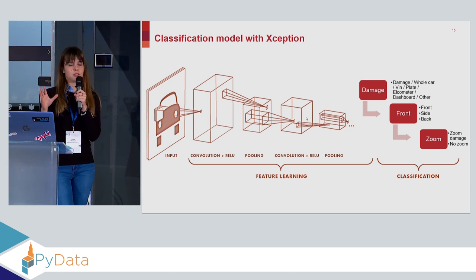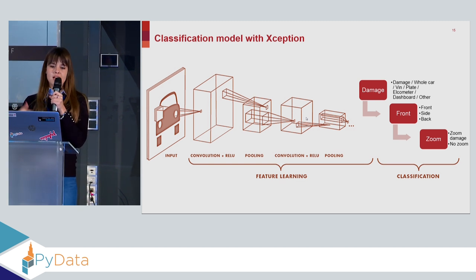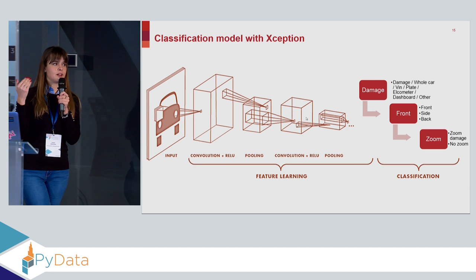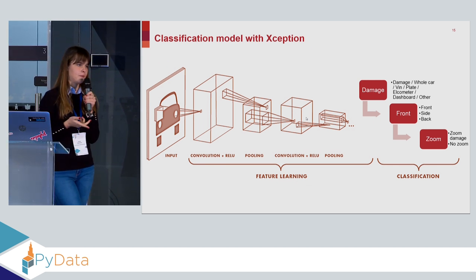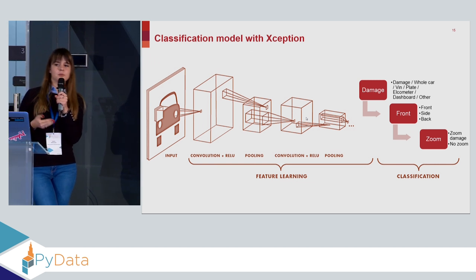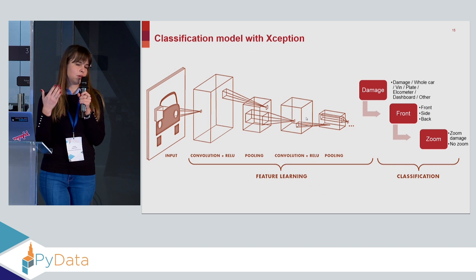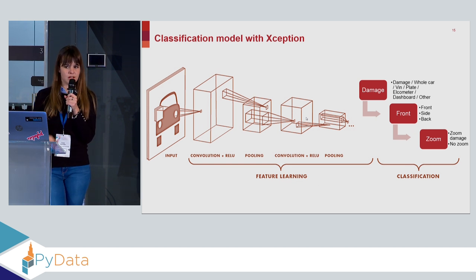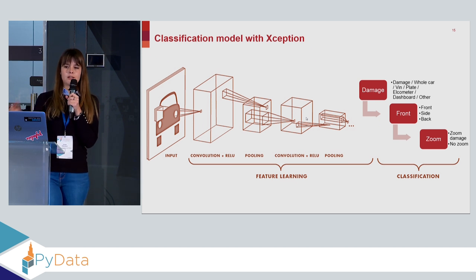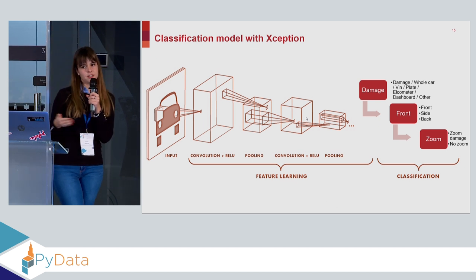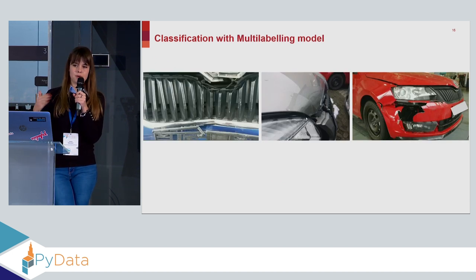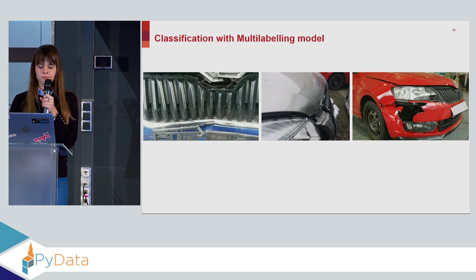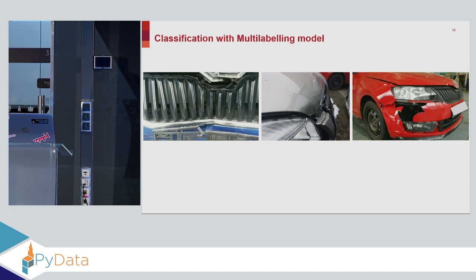From those eight categories, we focused on the pictures of the damage. Then we ran another classification model using Xception, and from the pictures with damage we were able to separate them into three categories: front, side, and back. After discussing with the business, they told us the most interesting ones are the front, since most damages are at the front. So from this we took the images of the front, then ran a third classification model to separate zoomed damage from non-zoomed damage of the front, and we focused on the zoomed ones.